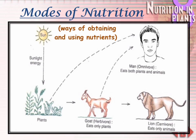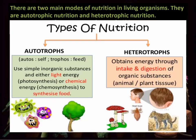Likewise, animals, fungi and other bacteria depend on plants and other organisms for food. On this basis, there are two main modes of nutrition: autotrophic and heterotrophic.